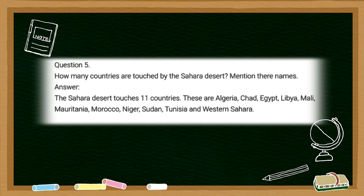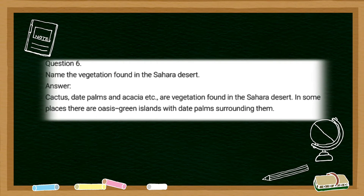The 11 countries touched by the Sahara desert are Algeria, Chad, Egypt, Libya, Mali, Mauritania, Morocco, Niger, Sudan, Tunisia, and Western Sahara. The sixth question is: name the vegetation found in Sahara desert. The answer is cactus, date palms, and acacia are vegetation found in Sahara desert.